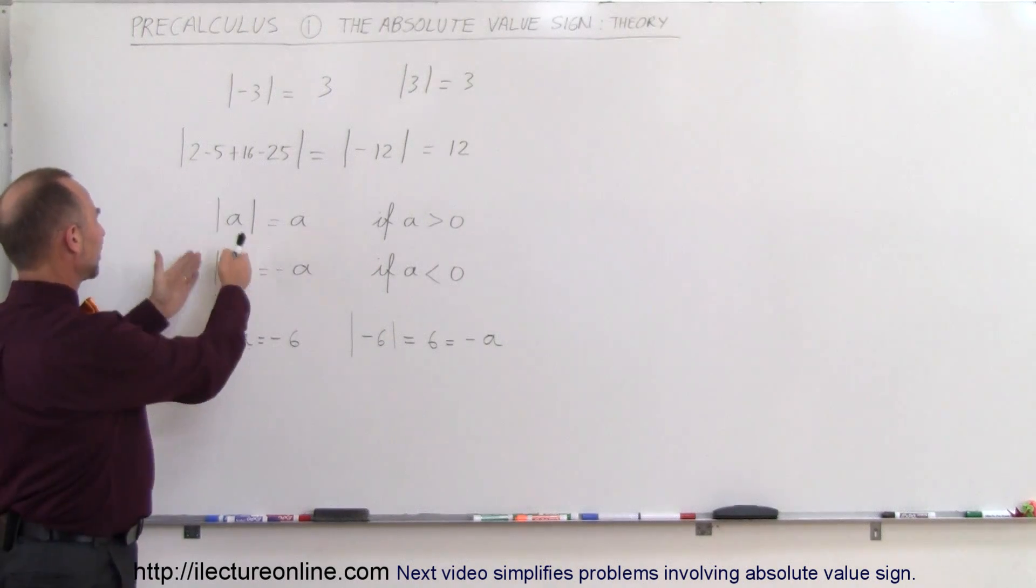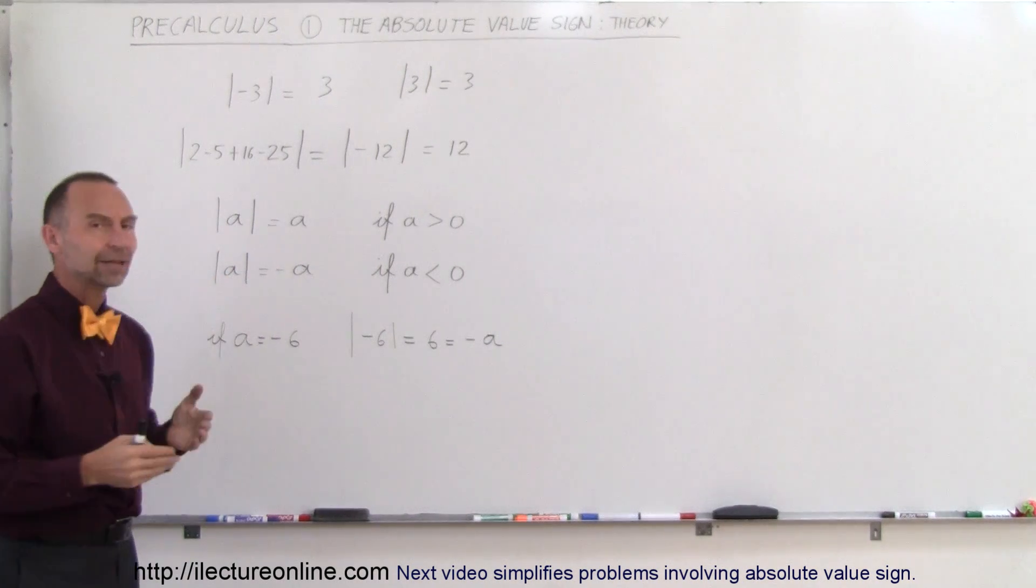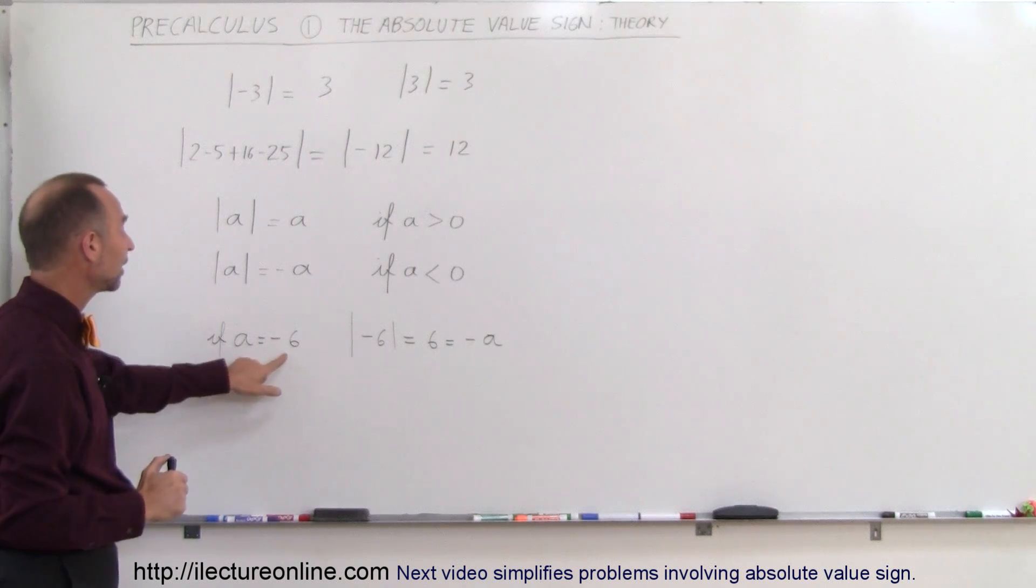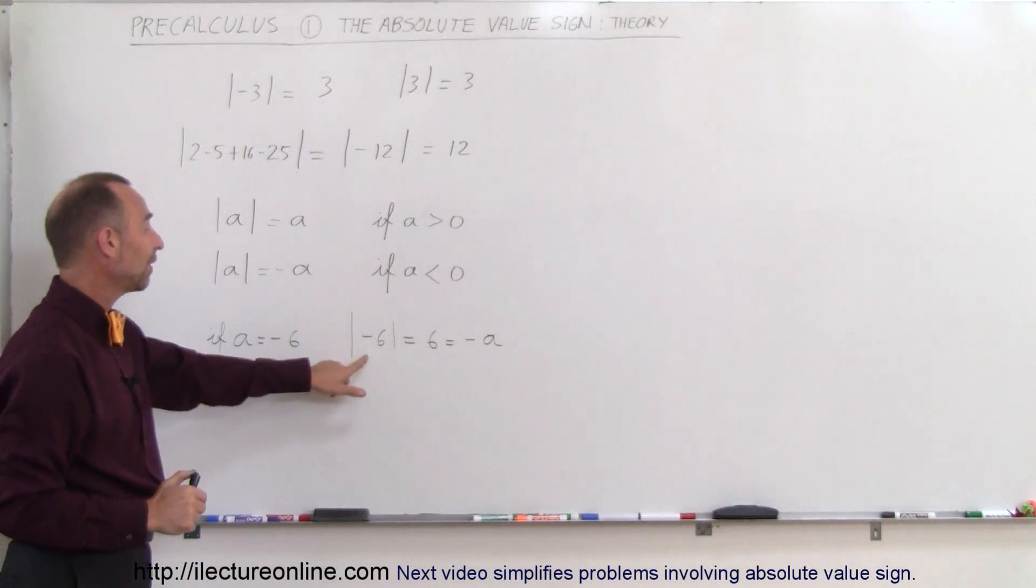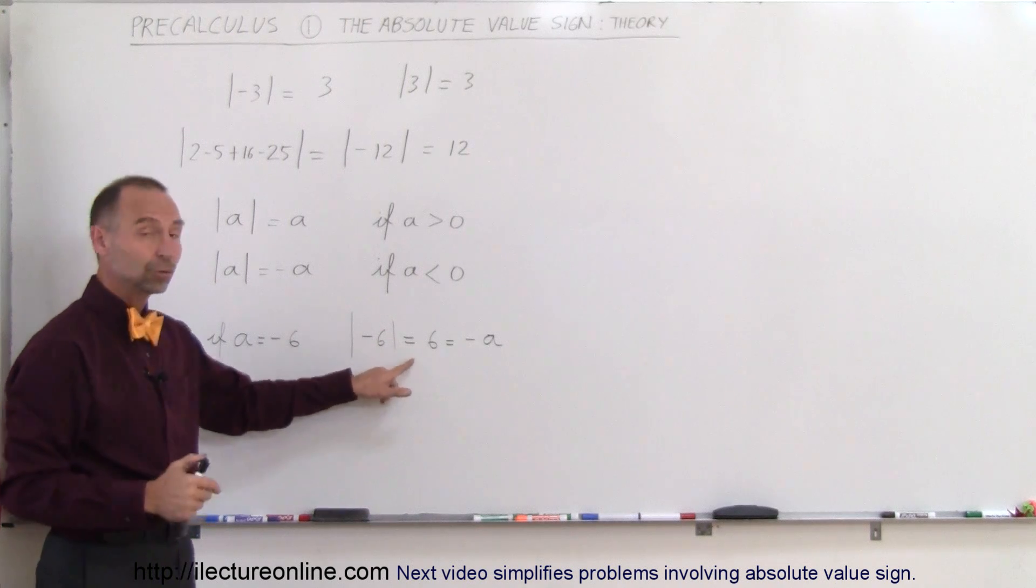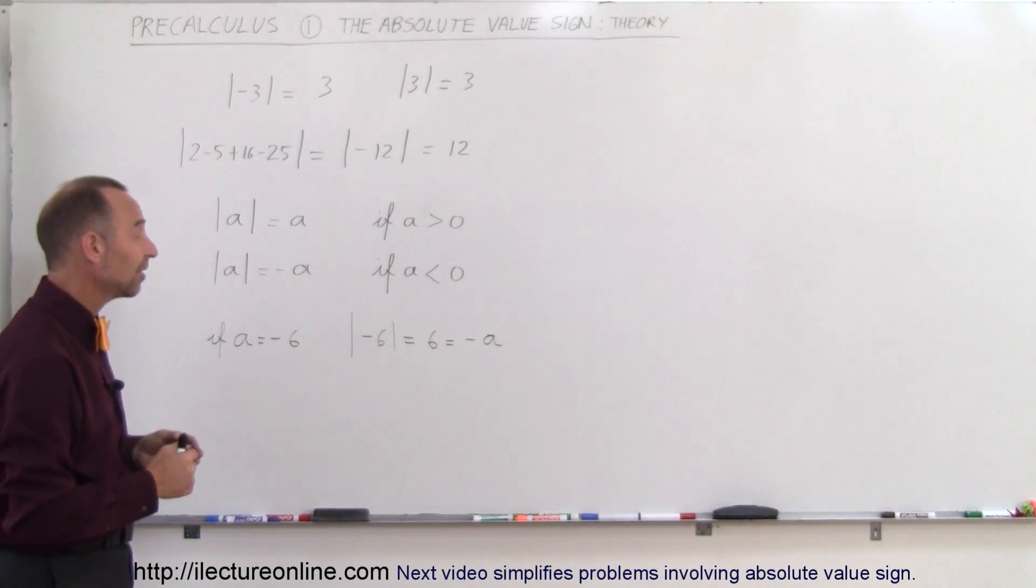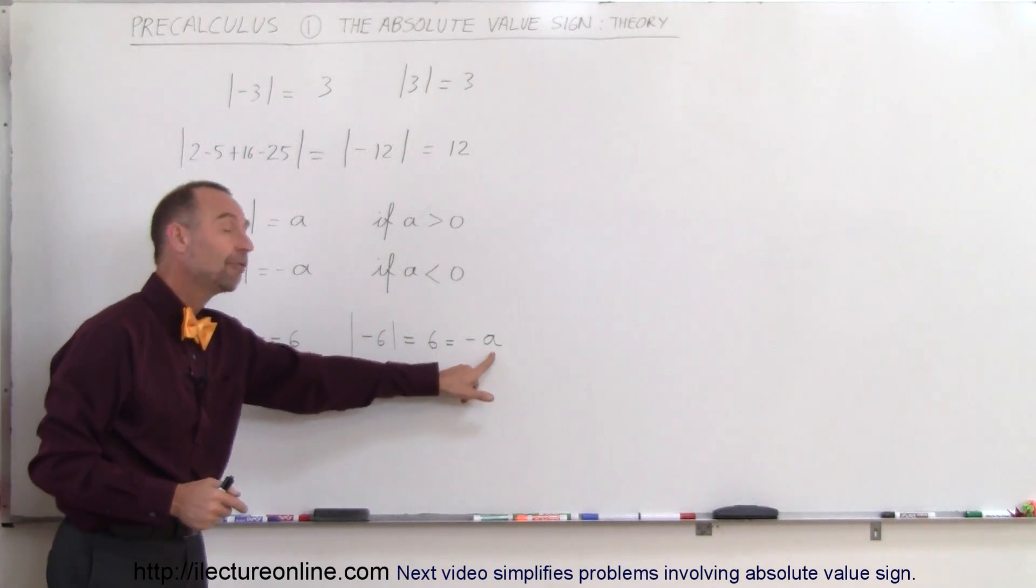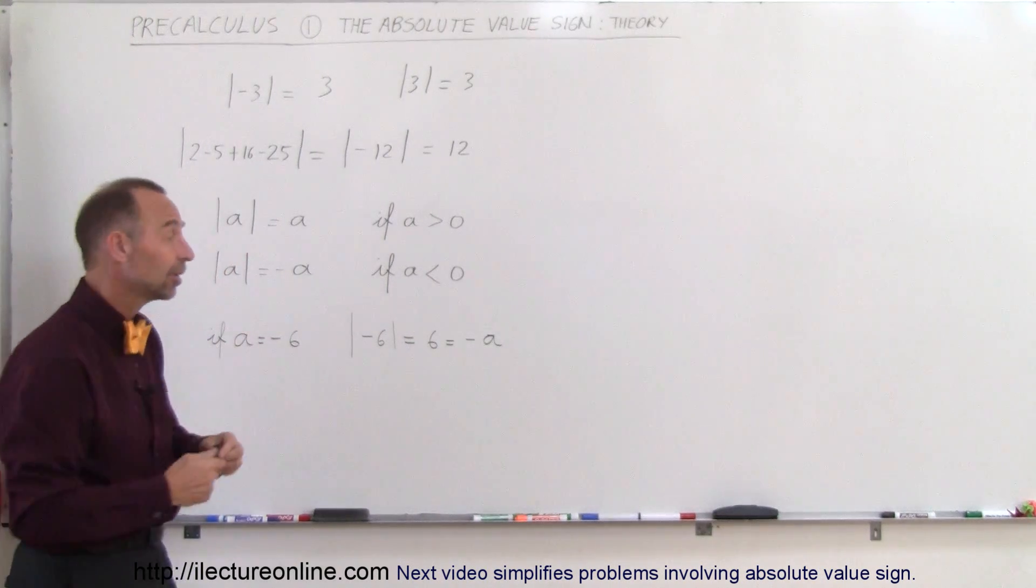You say, well, wait a minute. How can you take the absolute value sign of something and have the negative value? But that's not the case because, for example, if a is negative 6 and you take the absolute value of negative 6, that is equal to a positive 6. And of course, that makes sense. But then realize that that positive 6 is actually the negative value of a since a was a negative 6.